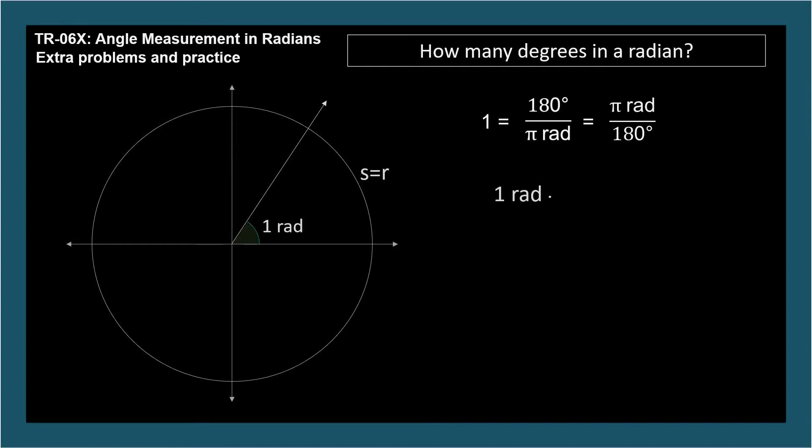Which do we use to convert radians to degrees? As a rule of thumb, what you want to cancel out, you put on the bottom. So we want to cancel out radians to get degrees. So the proper conversion factor is 180 degrees over π radians.